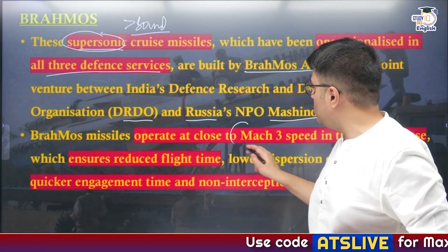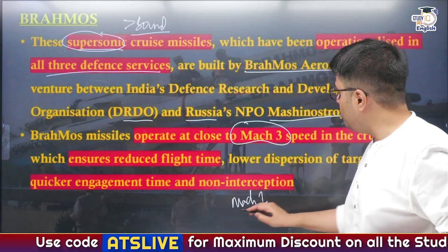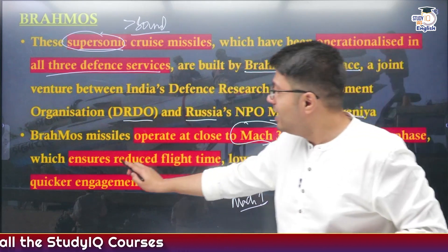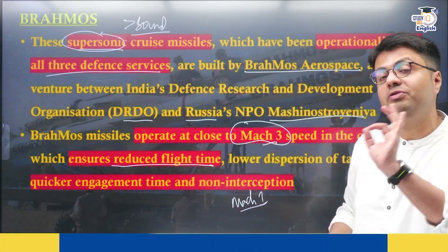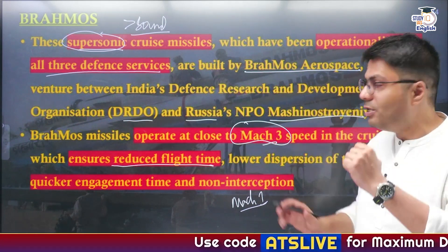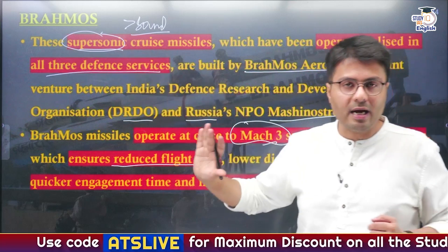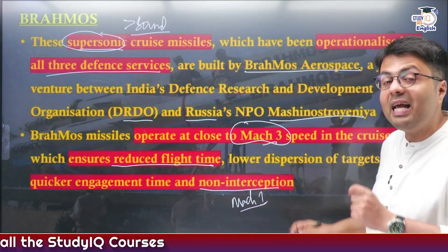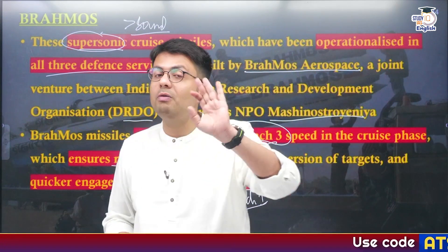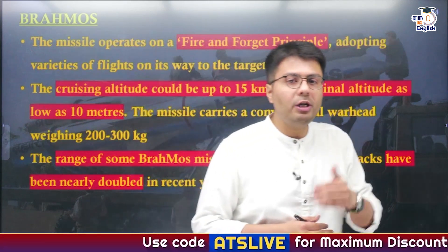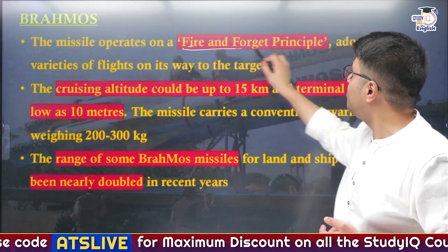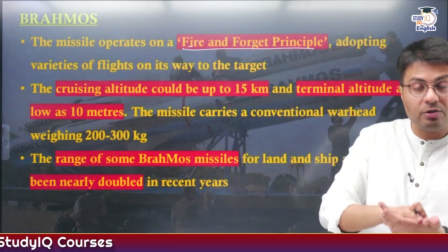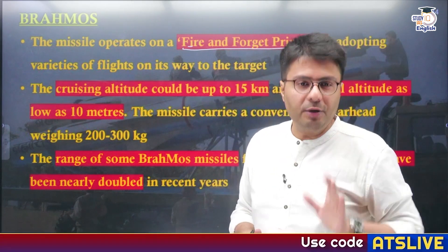When BrahMos travels at such high speed, it has a reduced flight time, which gives certain advantages. First, the ability of enemies to track the missile reduces, and even if they are able to track it, they won't be able to destroy it because it travels at such high speed. Similarly, it does not provide the enemy with any chances of interception. These missiles operate on the fire-and-forget principle, meaning they only need to be fired by adding GPS coordinates, and automatically they will hit their target with ultimate precision.